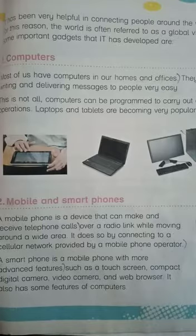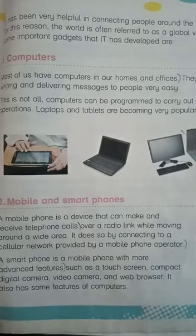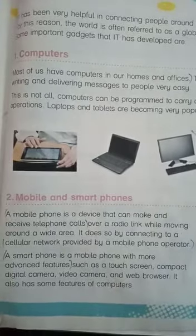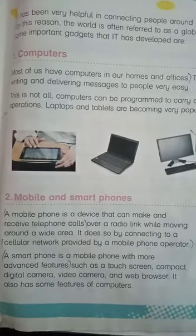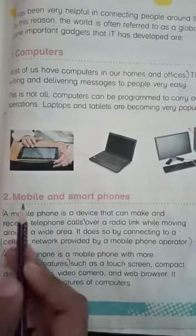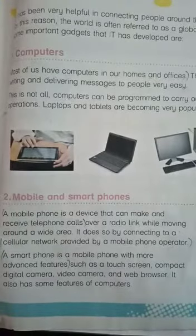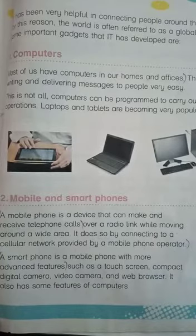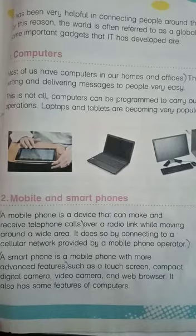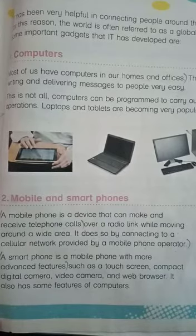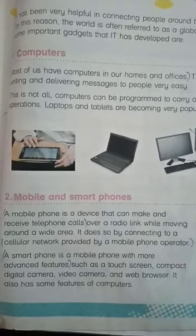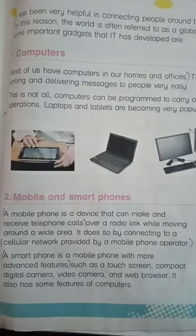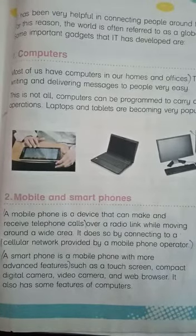We can receive calls and messages. If we have a message we can send that. If we are busy and we can't receive calls, we can convey our message. The mobile phone is a device that we can receive telephone calls over a radio link, and the cellular network provides connectivity to the mobile phone.